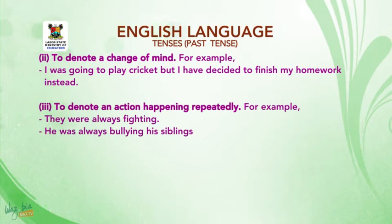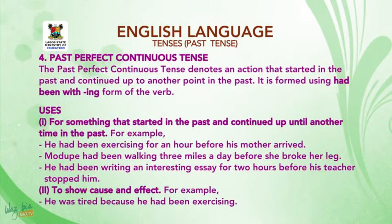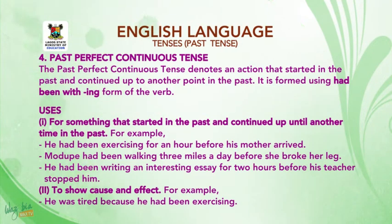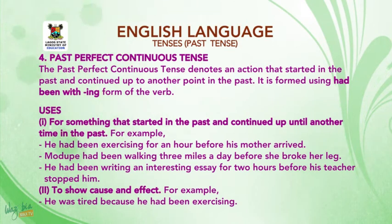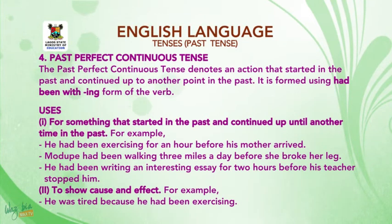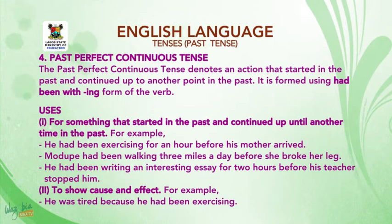Now let's go to the last type, the Past Perfect Continuous Tense. It denotes an action that started in the past and continued up to another point in the past. It is formed using HAD BEEN with the -ing form of the verb. Please take note of BEEN — it is spelled B-E-E-N.